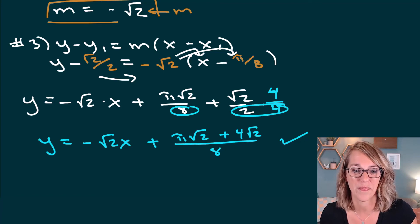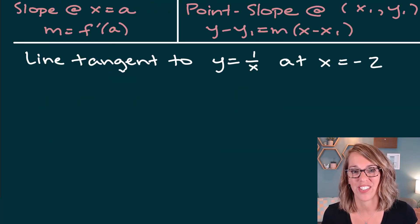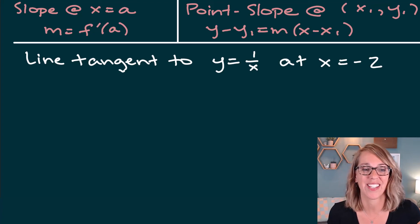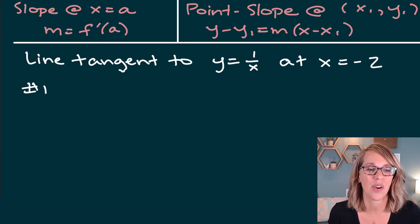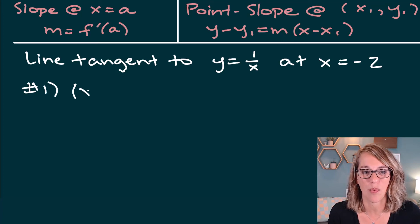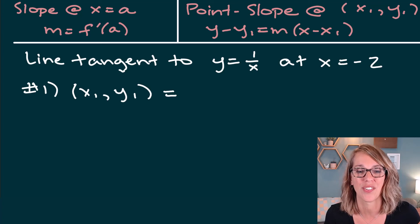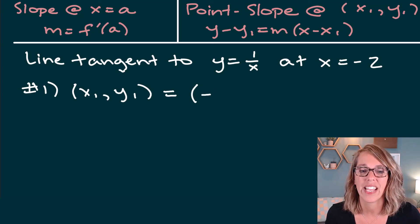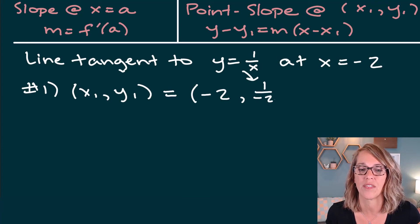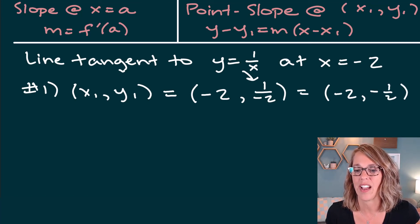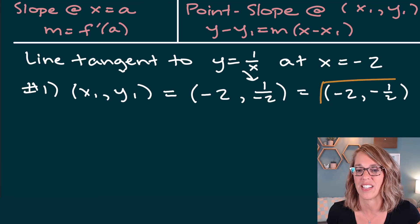For the last example, we're finding the tangent line to f(x) = 1/x at x = −2. Step one, find the point x₁, y₁. Plugging x = −2 into the function: y = 1/(−2) = −1/2. So the point of tangency is (−2, −1/2).